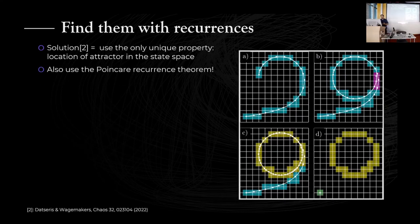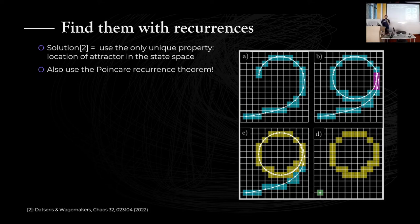This is where my work comes in. What we proposed is to not think in terms of features, but to use the only property an attractor has that is unique to it — its location in the state space. By definition, attractors cannot overlap. The second ingredient is the Poincaré recurrence theorem, which says that if I am on an attractor and evolve forwards in time, I am guaranteed to come arbitrarily close to the point I started from. This is true for any kind of attractor, whether chaotic, periodic, or otherwise.